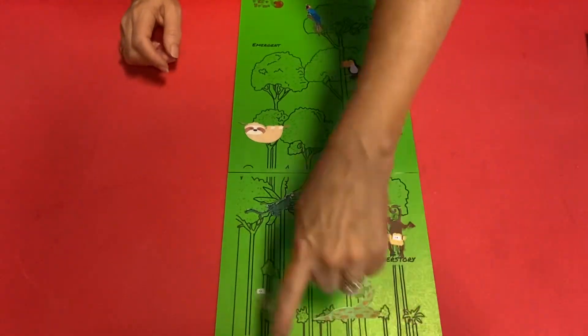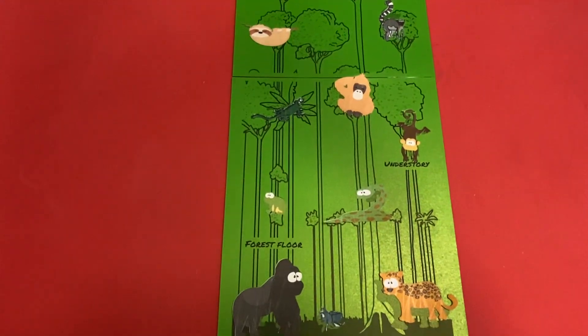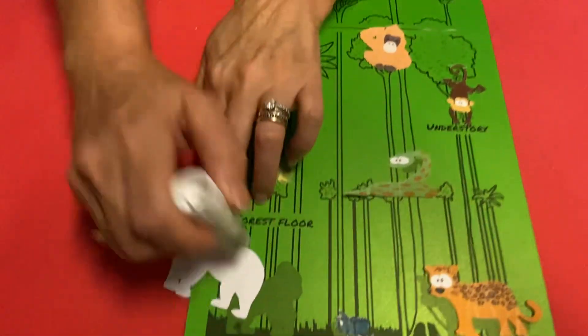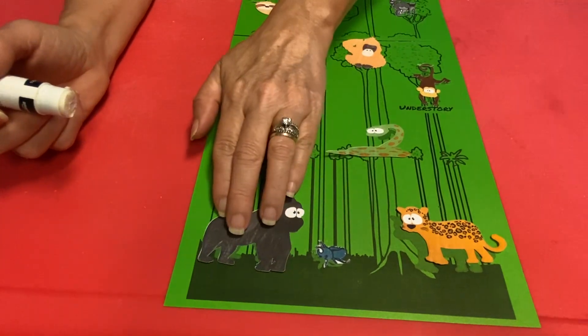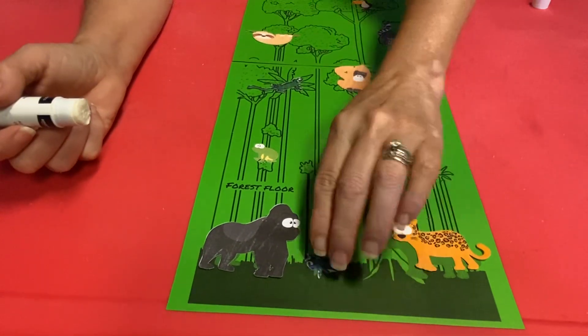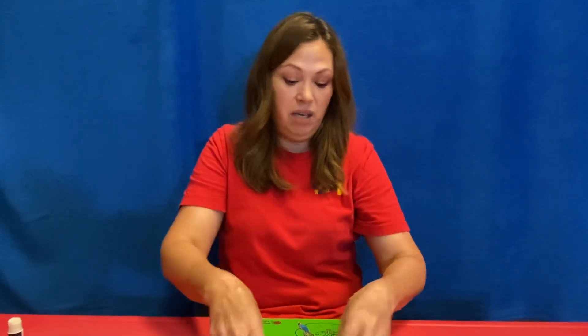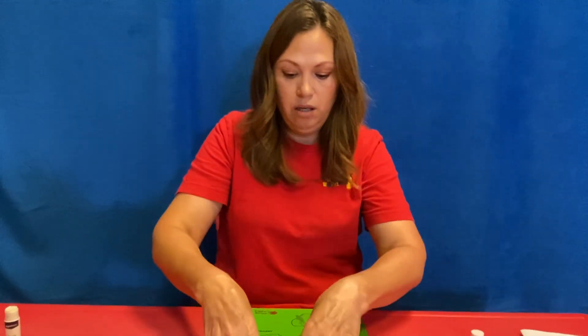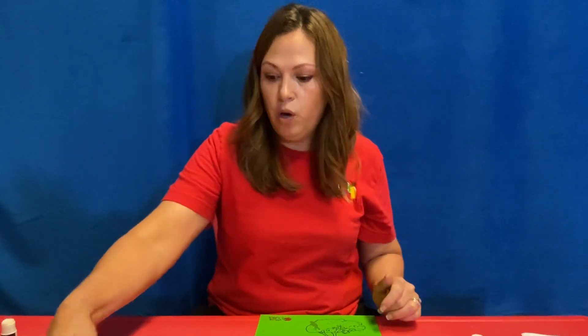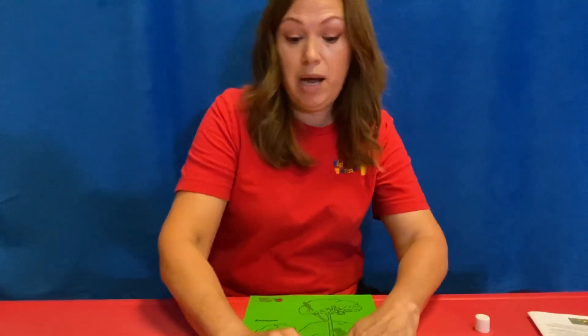Once you have all of your animals placed, you can flip them over and glue them on. One at a time, just glue and then put it back on, since we've already matched them all up. Now, if you don't want to glue them on and want to use this over and over again, don't glue them down. You can clear your board and get it out again in a few weeks. Maybe play a game with yourself — flip them over, grab one, and match it up. Just another way to use this if you don't want to do one and done.